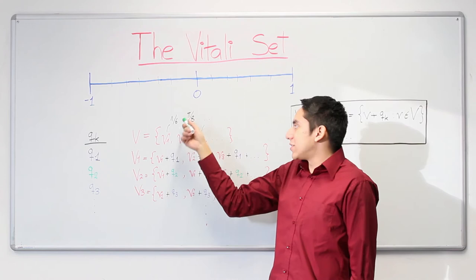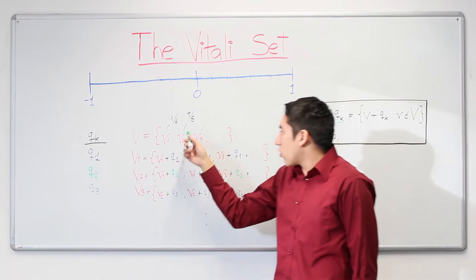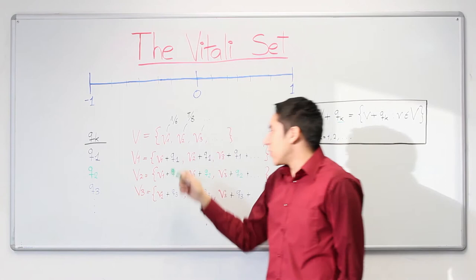To create our set V_1, we take all the elements of the Vitali set, but then we add the first term of the rational numbers: V_1 plus Q_1, V_2 plus Q_1, V_3 plus Q_1, and so on.